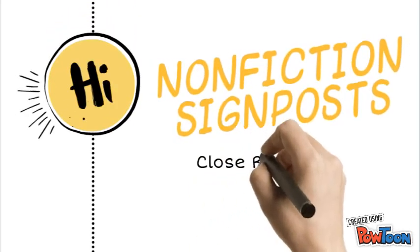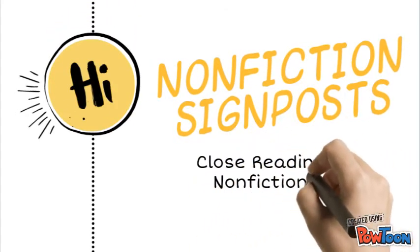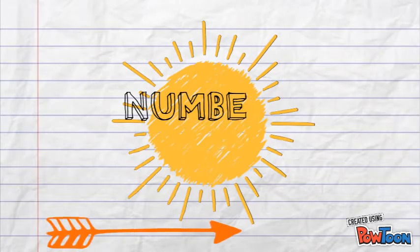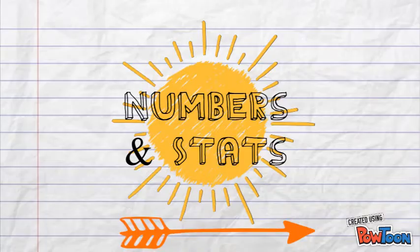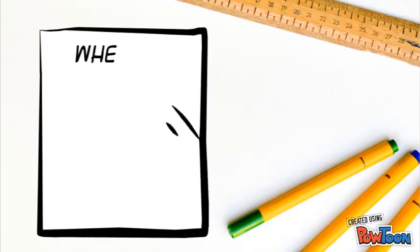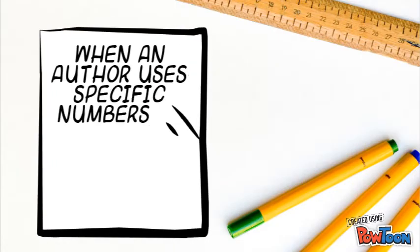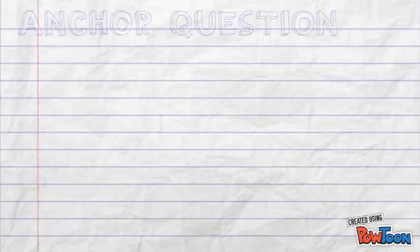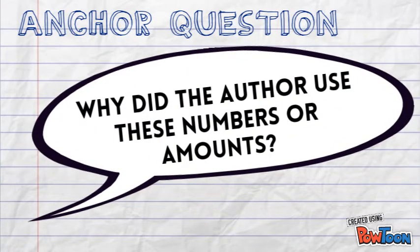Today we're going to be talking about nonfiction signposts. These are signposts when you're reading nonfiction texts that will help you to become a closer reader. The signpost we're going to be talking about today is numbers and stats. Numbers and stats is when an author uses specific numbers or amounts or provides statistical information, like percentages. When you notice a number and stat, you should stop and ask yourself: why did the author use these numbers or amounts?